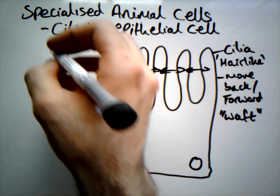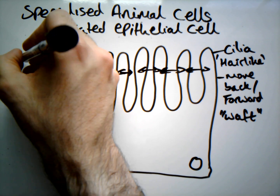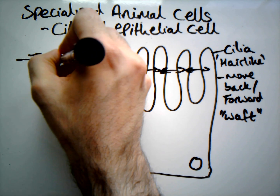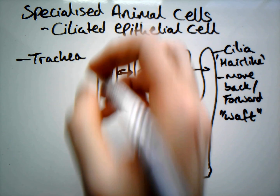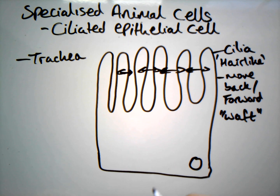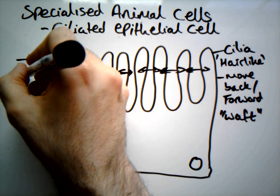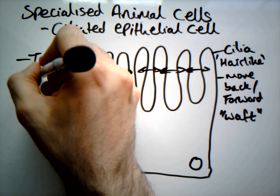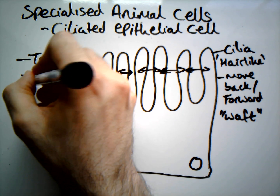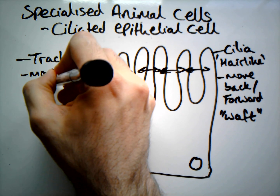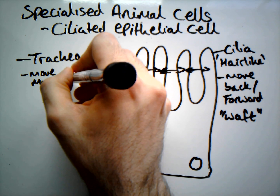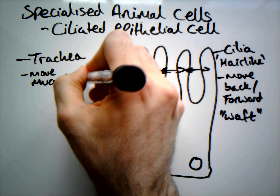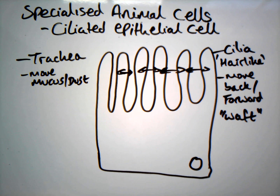They're found in two locations. They're found in the trachea, or the windpipe, where they move things like mucus and dust away from our lungs — so they have a protective function.